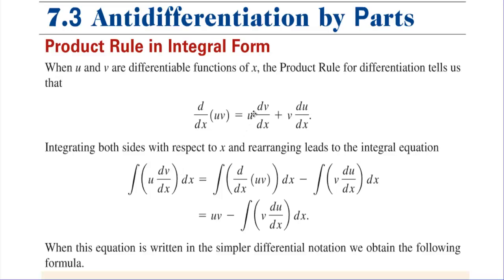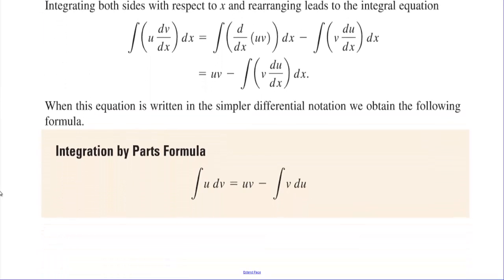We can take the integral of u dv, minus v du, and that equals uv minus the integral of v du. When this equation is written in simpler differential notation, we obtain the integration by parts formula: the integral of u dv equals u times v minus the integral of v du.